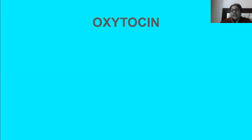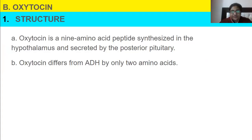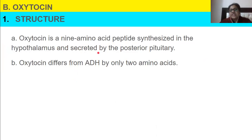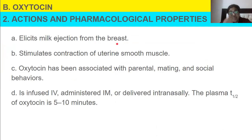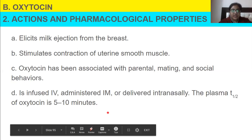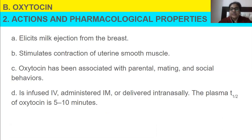Oxytocin is also a nine amino acid peptide synthesized in the hypothalamus and secreted from the posterior pituitary. Oxytocin differs from ADH by only two amino acids. Its actions include eliciting milk ejection from the breast and stimulating contraction of uterine smooth muscle. Oxytocin has also been associated with parental, mating, and social behaviors. It is administered IV, intramuscularly, or intranasally, with a half-life of five to ten minutes.